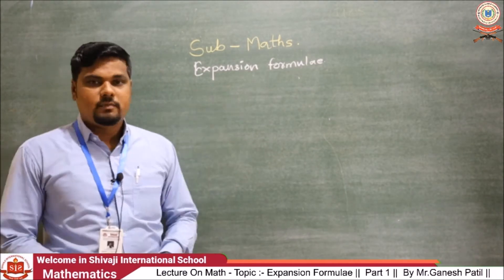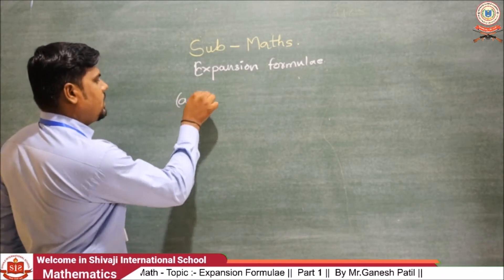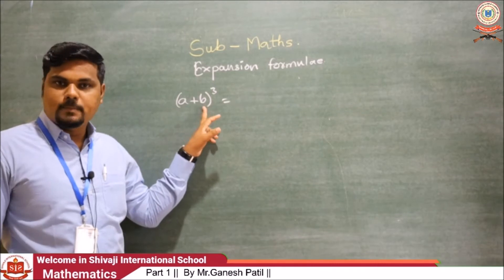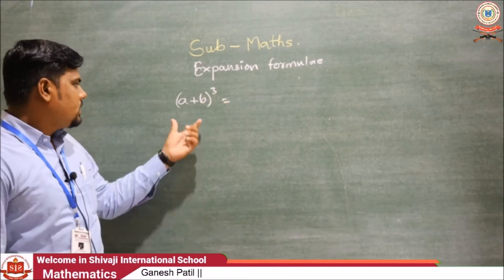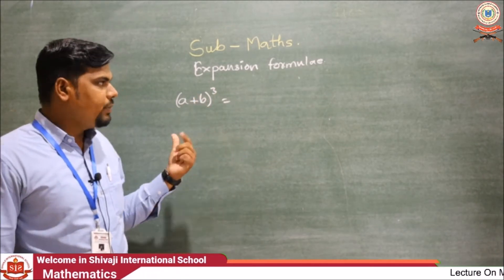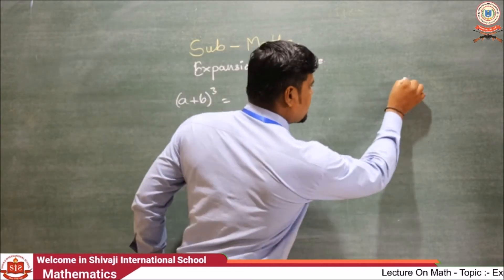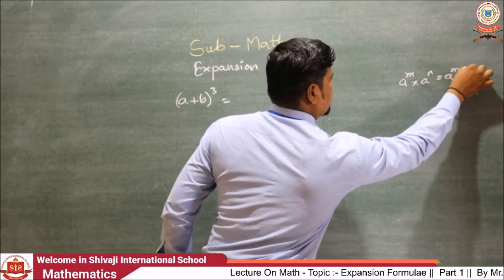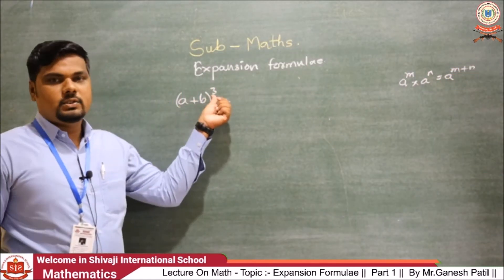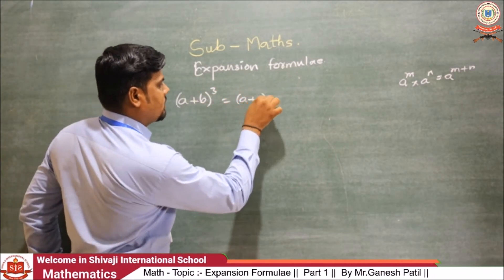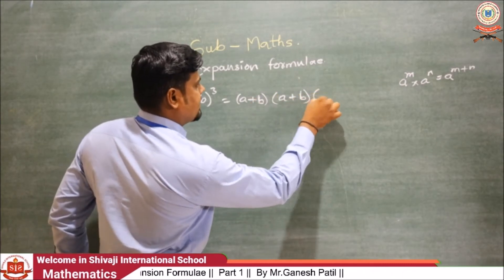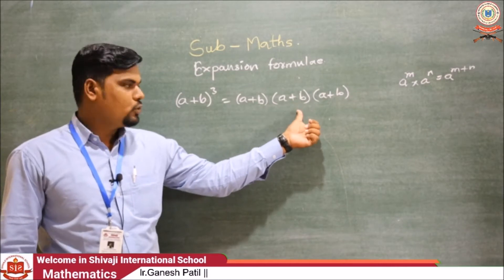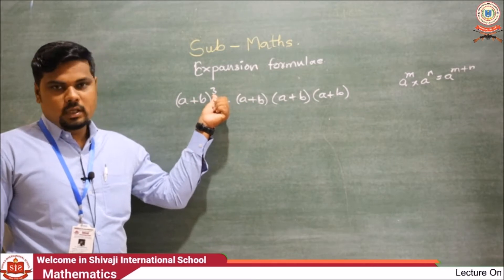The first expansion formula is (A + B)³. Here A and B are two terms and the bracket is cubed. To solve this, we use the rules of indices: A raised to m into A raised to n equals A raised to m plus n. Using this, we write (A + B) three times because the power — the degree of the bracket — is 3.